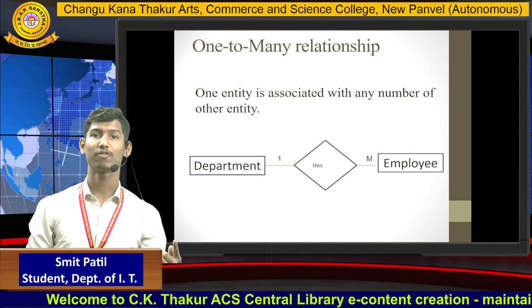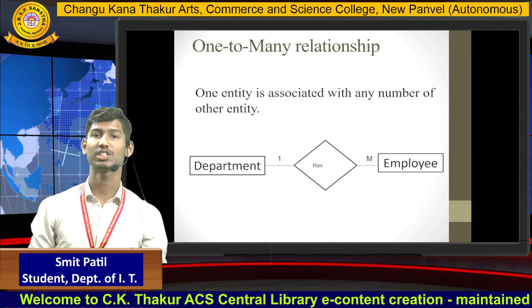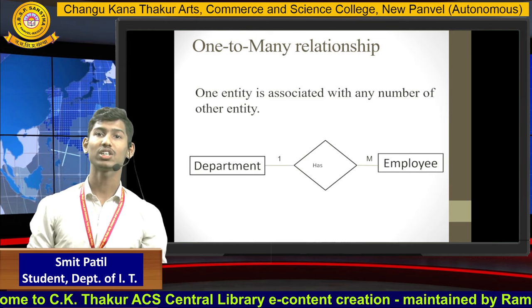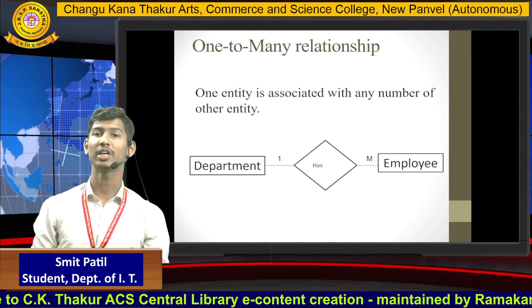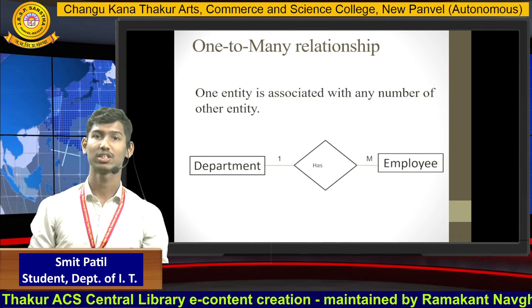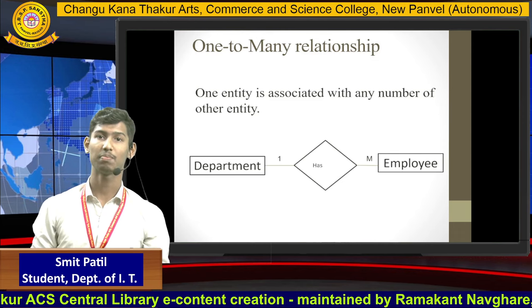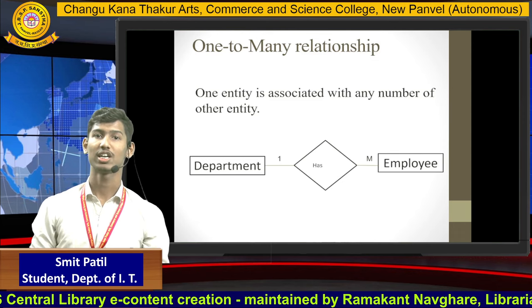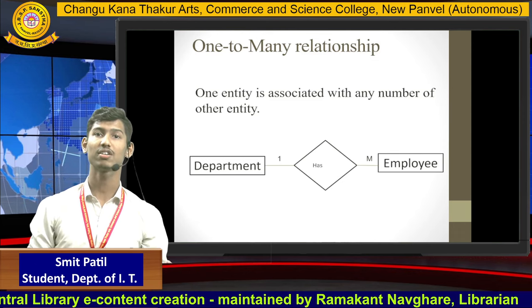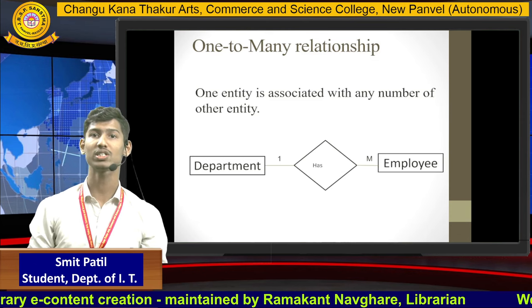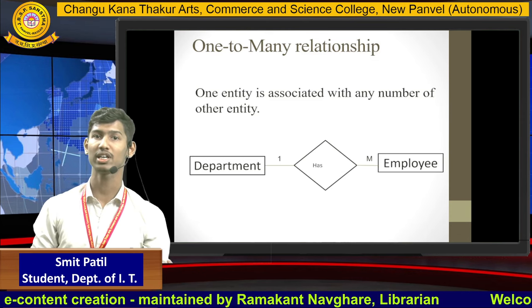One-to-many relationship: one entity is associated with many other entities. For example, a department is one entity and employee is the many entity.